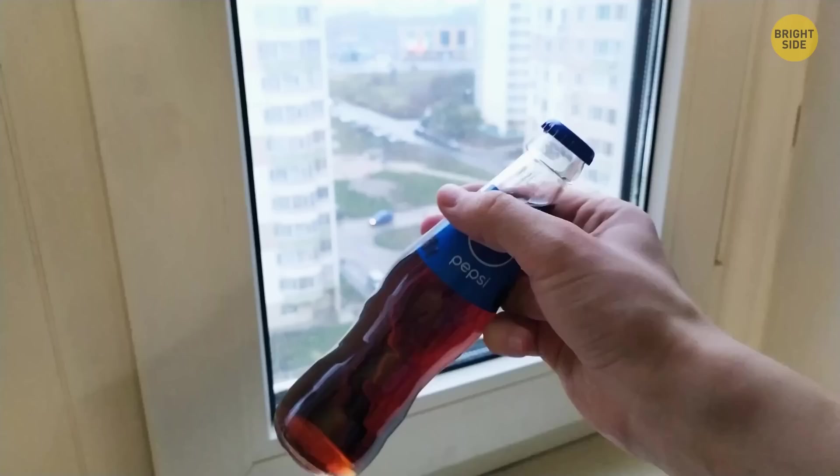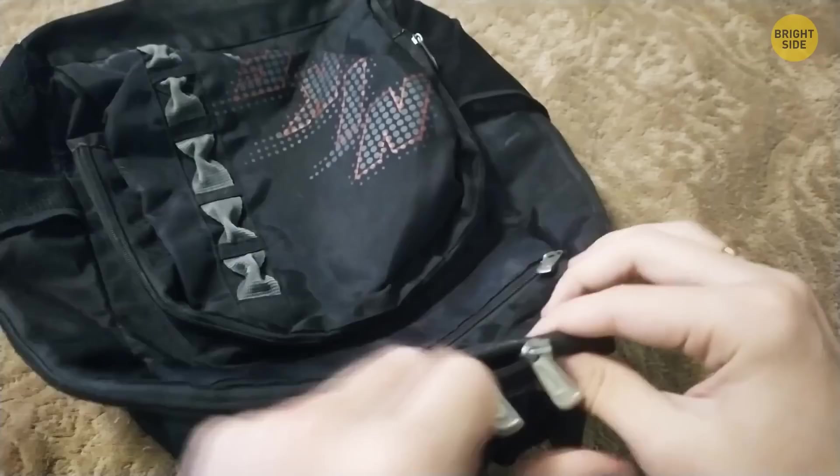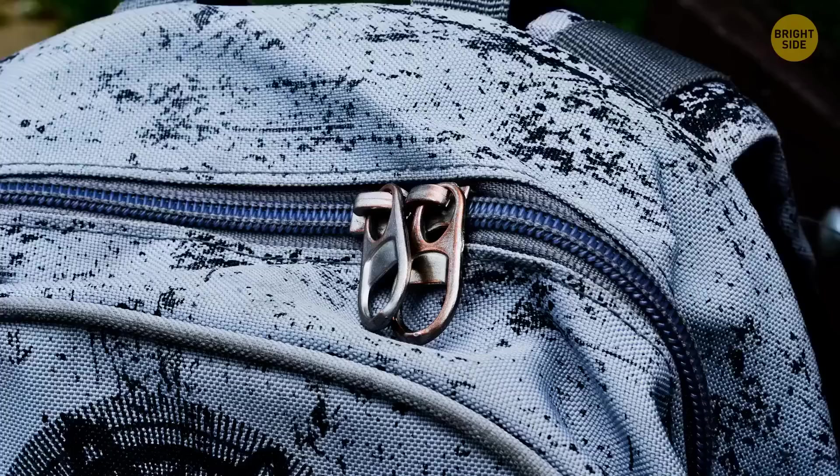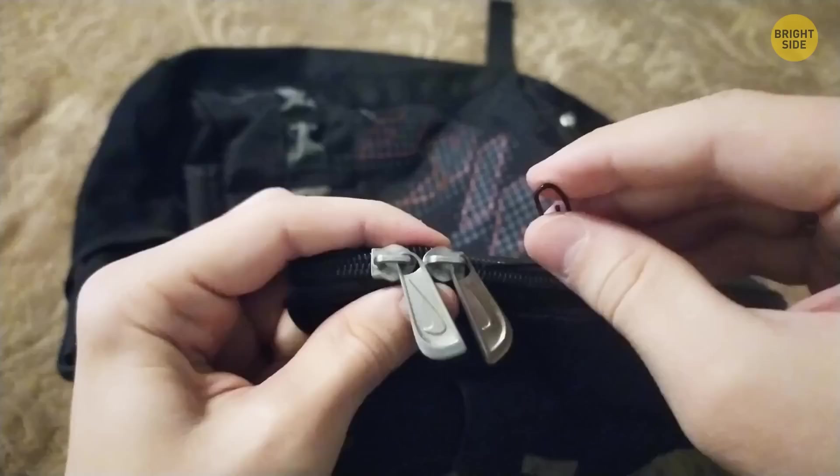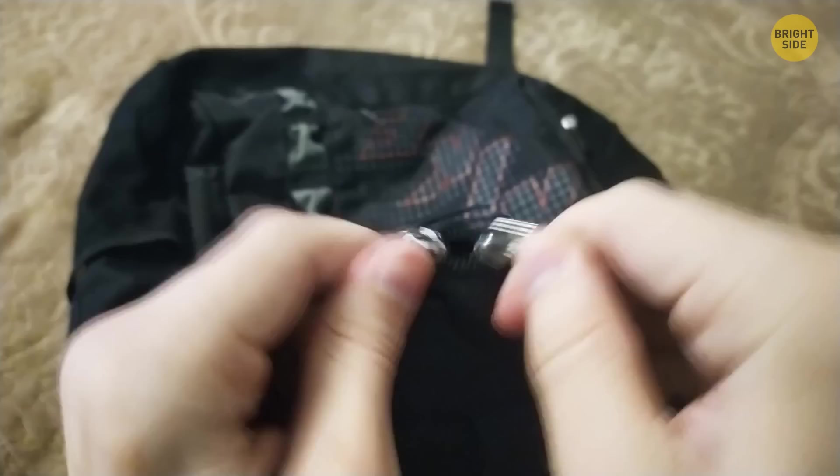Two zips too much? Maybe. But they come in handy as a clever anti-theft device. Just lock them together. Now, no one can open your backpack. Don't have a lock on you? You can also tie them together with some string, or even just a paper clip. Anything to slow those pickpockets down.